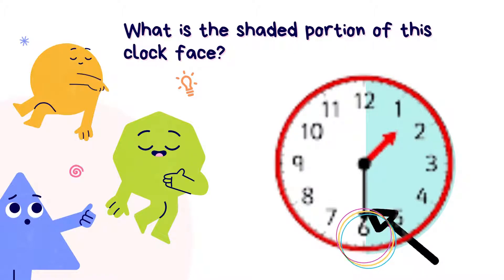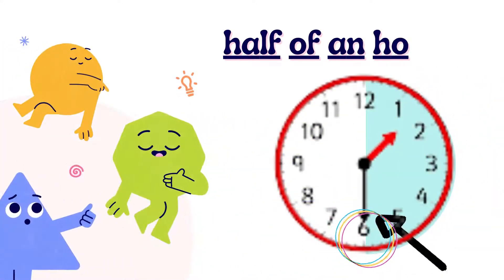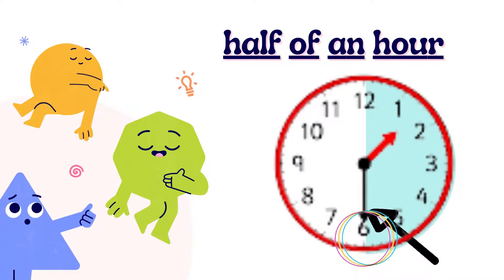Now let's look at the next question. Look at the shaded portion of this clock face and look at the minute hand. The minute hand is pointing to number 6. What is the shaded portion of this clock face? Let's check the answer — the answer is half of an hour. Well done if you got the answer correct!